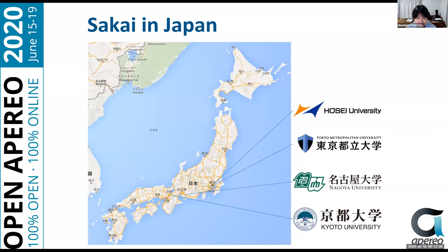Today's presenters belong to universities using Sakai as a university-wide learning management system. We formed the Japan Aperio community, which is a user group of Aperio products in Japan. The former name of the group was the Japan Sakai community. Today we have four talks. First presenter is Professor Shoji Kajita. He is a professor at Kyoto University and is known as the leading person of the learning management system in Japan.